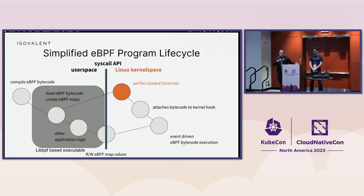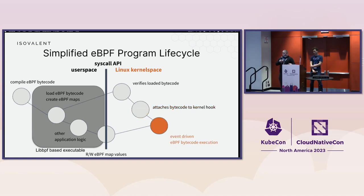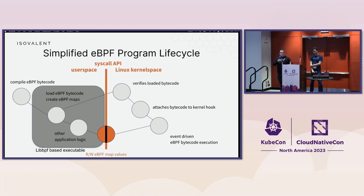Once you've loaded the bytecode via the API, it'll verify that it's safe and possible to run. It'll attach it to the correct kernel event hooks — whether it's the networking or file system layer, whatever the eBPF program is supposed to be in line and executing on. Then it becomes an event-driven executable. It's not running parallel in some sort of thread — as event data or kernel data flows through the kernel, it'll use these hook points and activate these eBPF programs at that point, which is why it makes it super efficient. The kernel space and user space side are interacting via eBPF maps via the syscall API, which is how you get observability data out of the kernel or reconfigure eBPF programs to take different actions.